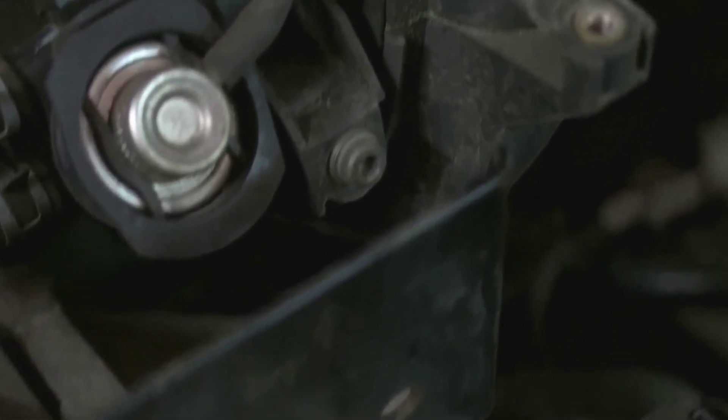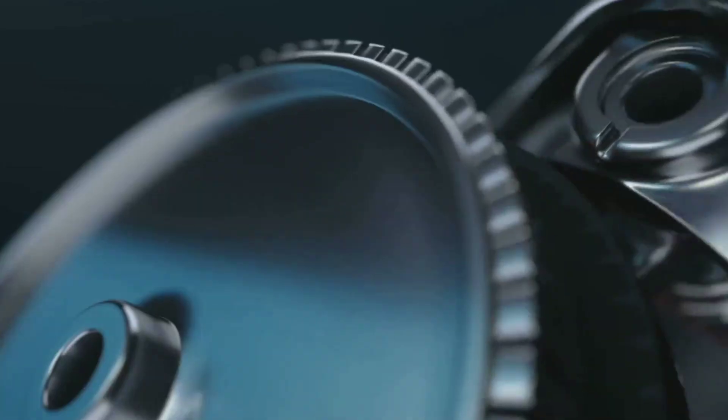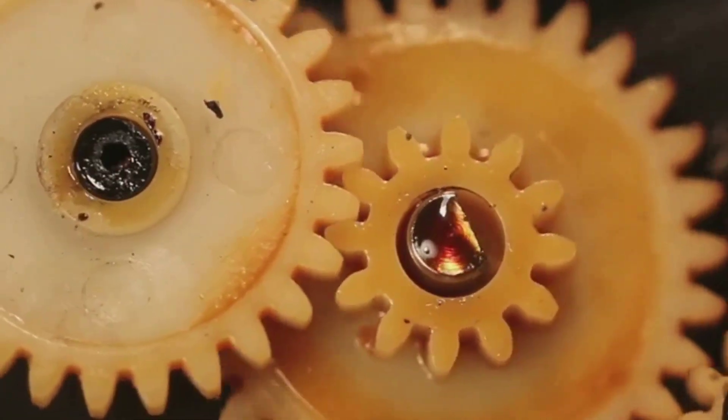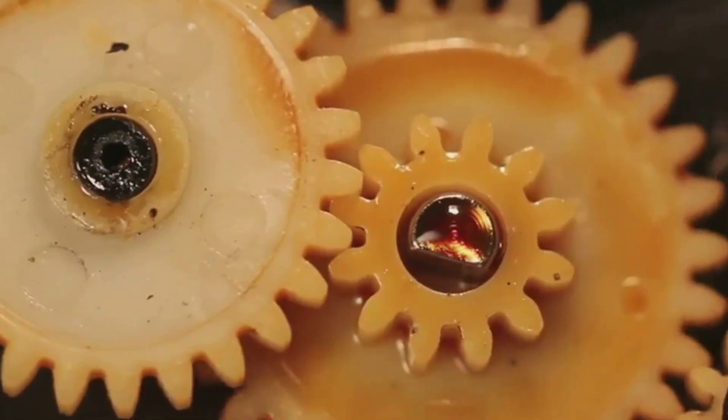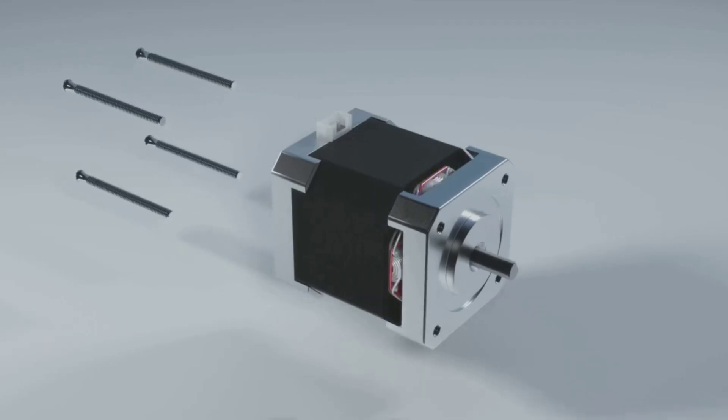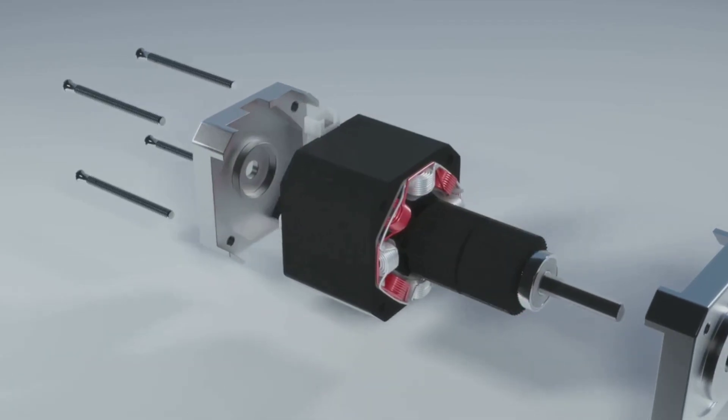The commutator is the unsung hero of the DC motor. It's a split ring that reverses the current in the armature coil every half turn. As the rotor spins, the brushes stay put, while the commutator rotates, swapping connections at just the right moment. This keeps the torque pushing in the same direction so the motor doesn't stall or reverse.